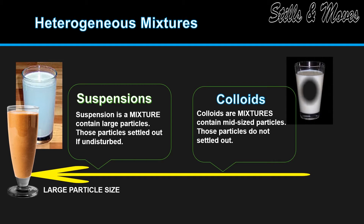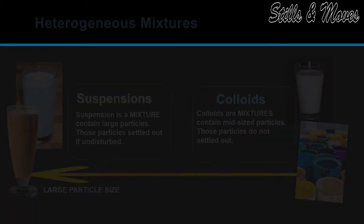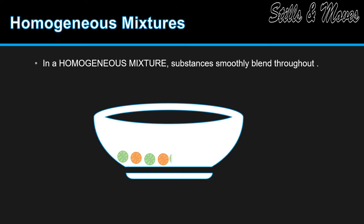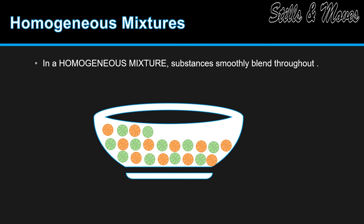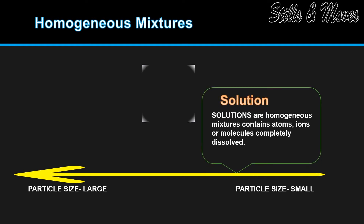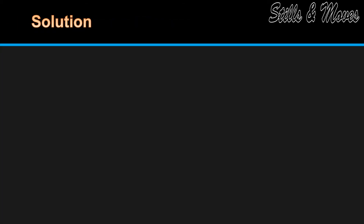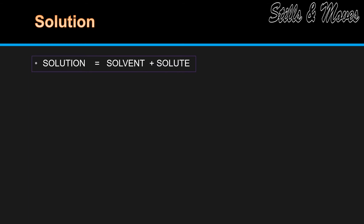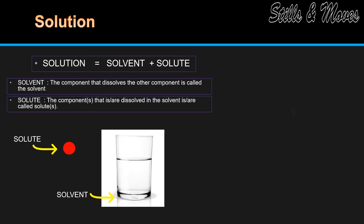Colloid particles do not settle out. In a homogeneous mixture, substances smoothly blend throughout. Solutions are homogeneous mixtures containing atoms, ions, or molecules that are completely dissolved. A solution is a special type of homogeneous mixture composed of two or more substances, in which a solute is dissolved.